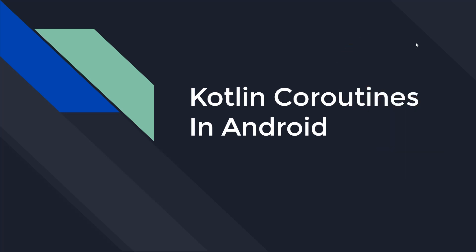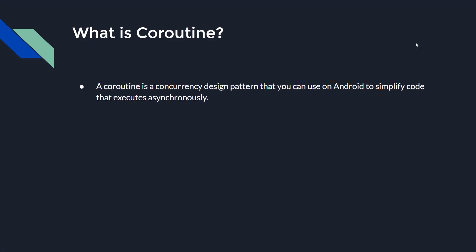Now let's start with the very first question: what is a coroutine? It is basically a feature in Kotlin that helps us write asynchronous code in a very simplified and readable manner. It makes writing asynchronous code simpler than ever. You might already know how difficult it is to manage and write asynchronous code, but once you start using coroutines you will say wow.